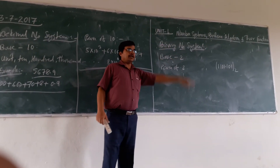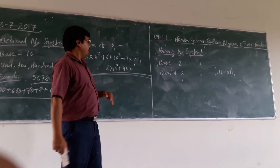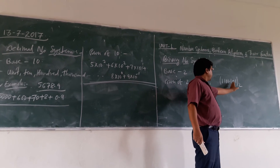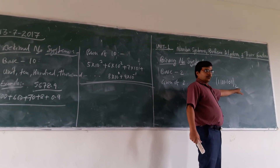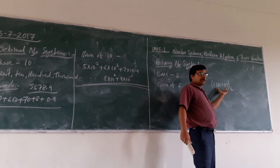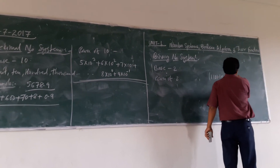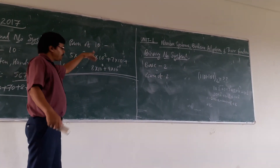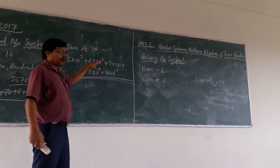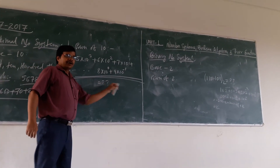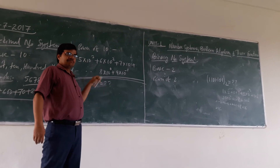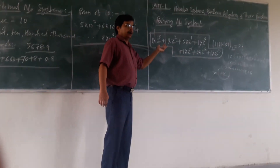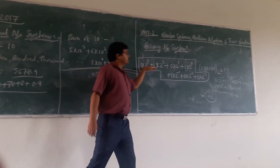In the binary number system, you have two digits — 0 and 1 — and the base is 2. Let us take the binary number 1.101 with base 2. We need to find the power of 2 representation. We have to focus on the decimal point — the digits on the left-hand side will have positive powers starting from 0, 1, 2, 3, and those on the right-hand side will start from minus 1, minus 2, minus 3. So, the power is always on 2.